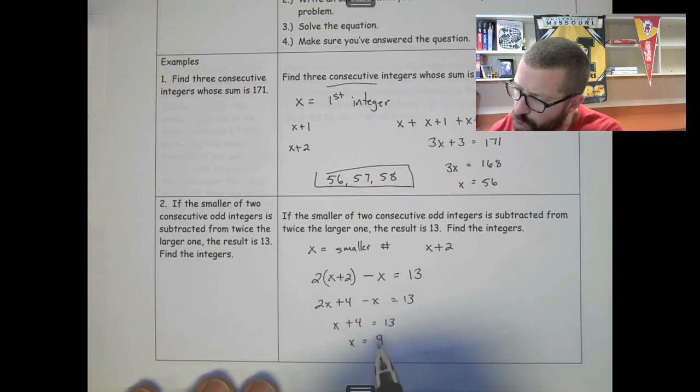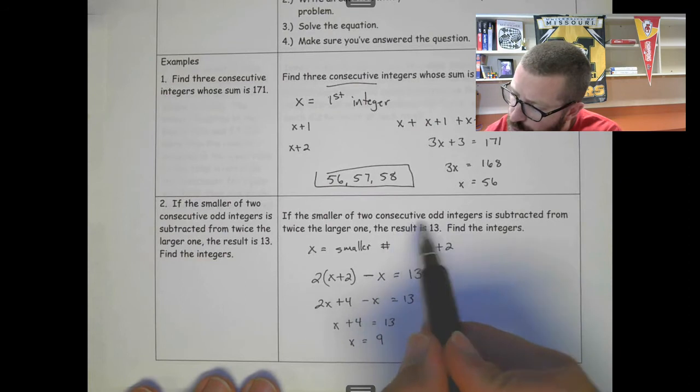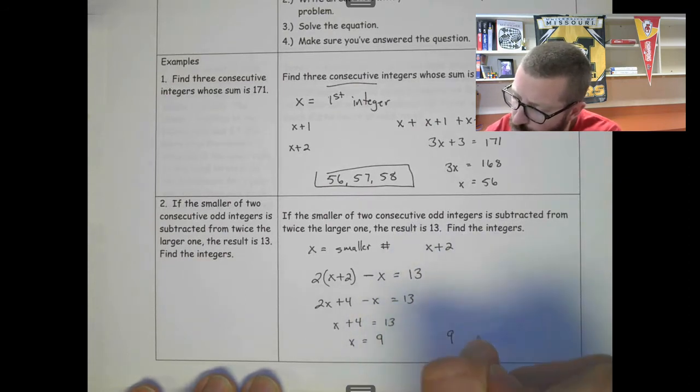That makes x plus 4 equal to 13, so x must equal 9. X is 9 and the next one is 11, so 9 and 11.